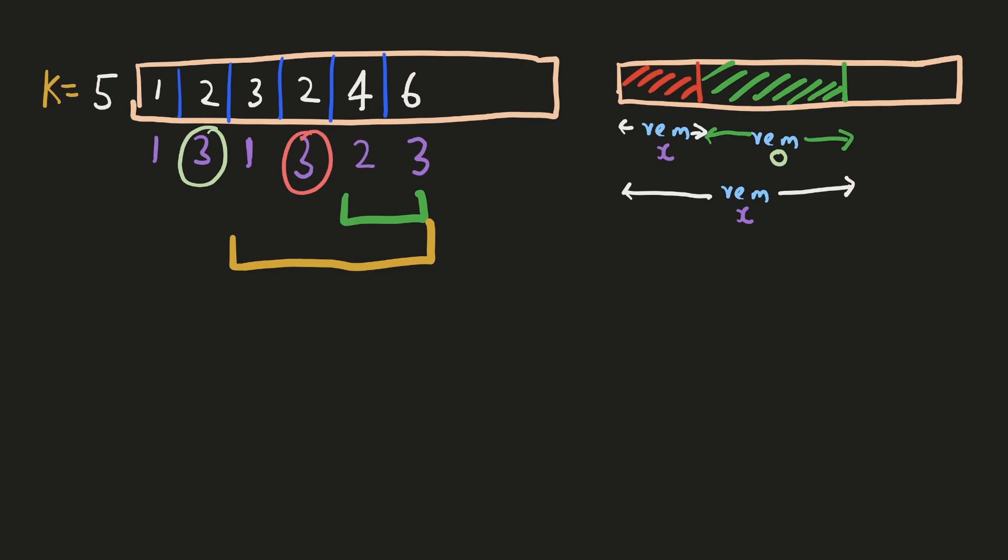So to solve this, we have to track how many times we have seen a particular remainder before. And if we encounter the same remainder again, the number of subarrays ending at our current number which will be divisible by k will be equal to the number of previous occurrences of the same remainder.